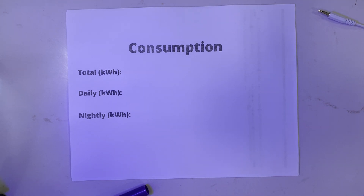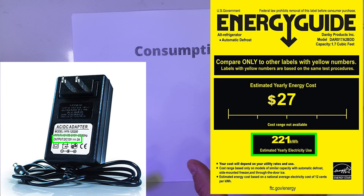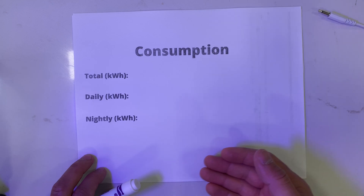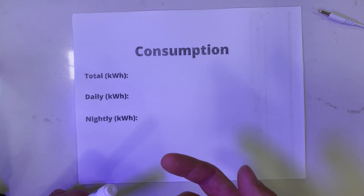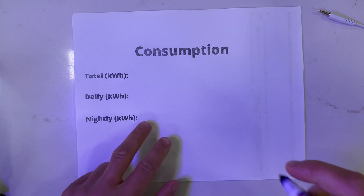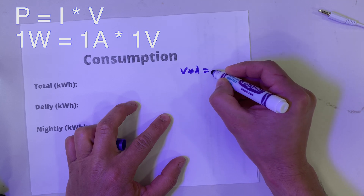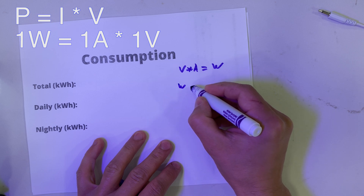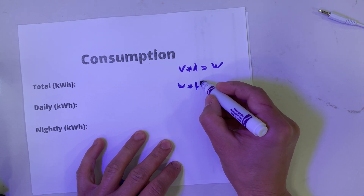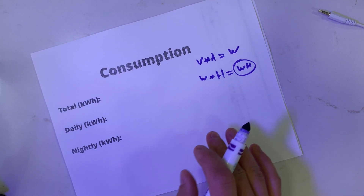The third way is manual. You look at any appliance's power adapter for the amps and volts output. To get watts, multiply volts by amps. To get kilowatt hours, multiply those watts by how many hours per day you use that appliance. That gives you watt hours — which is what we're looking for.